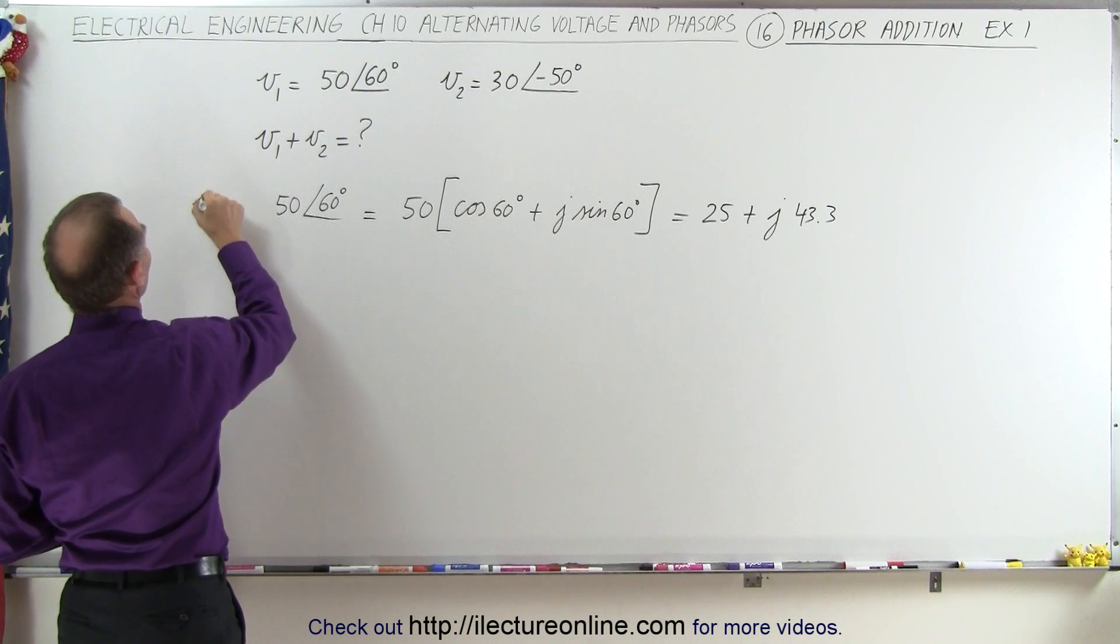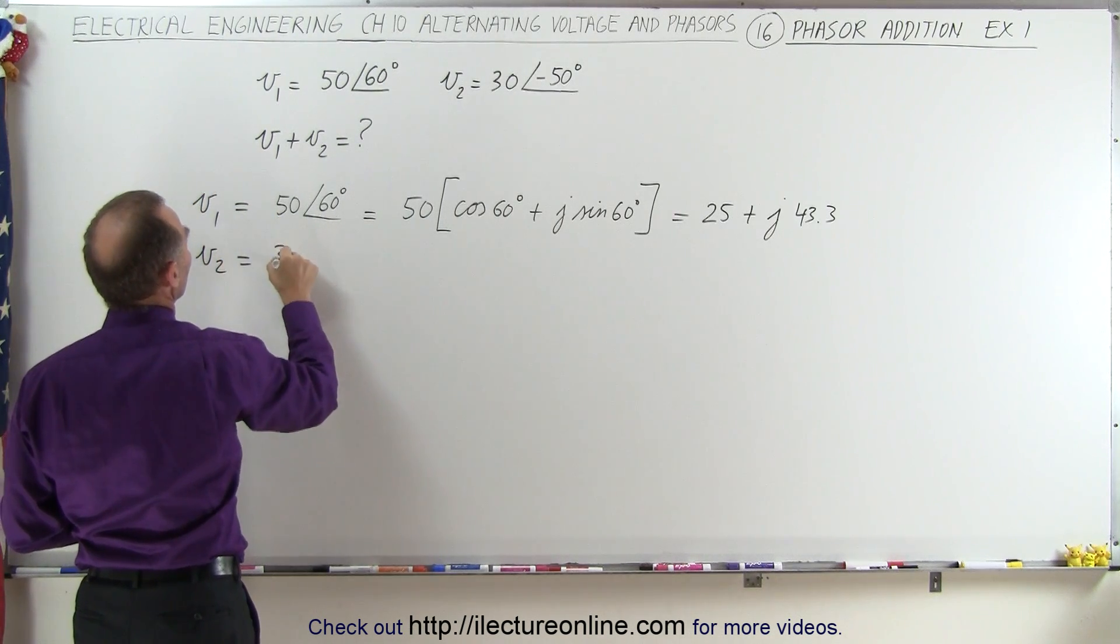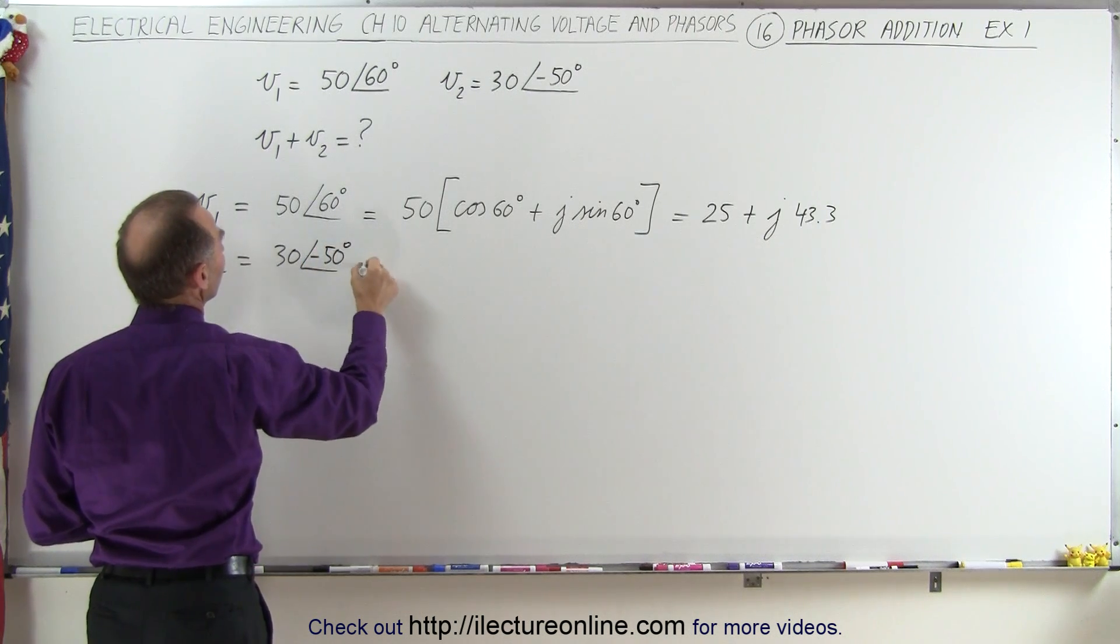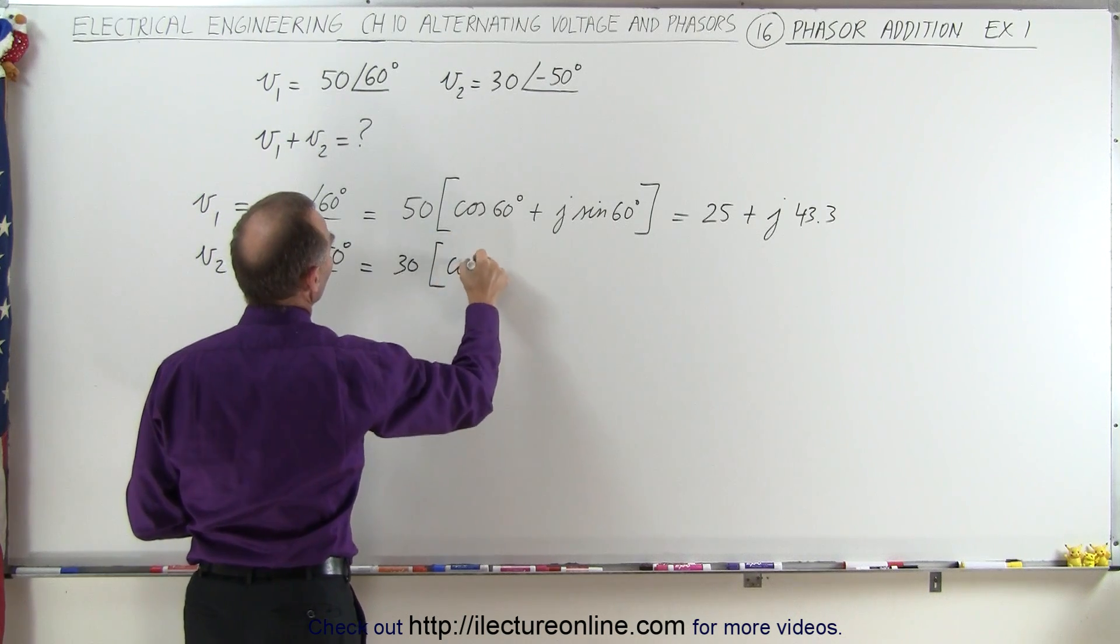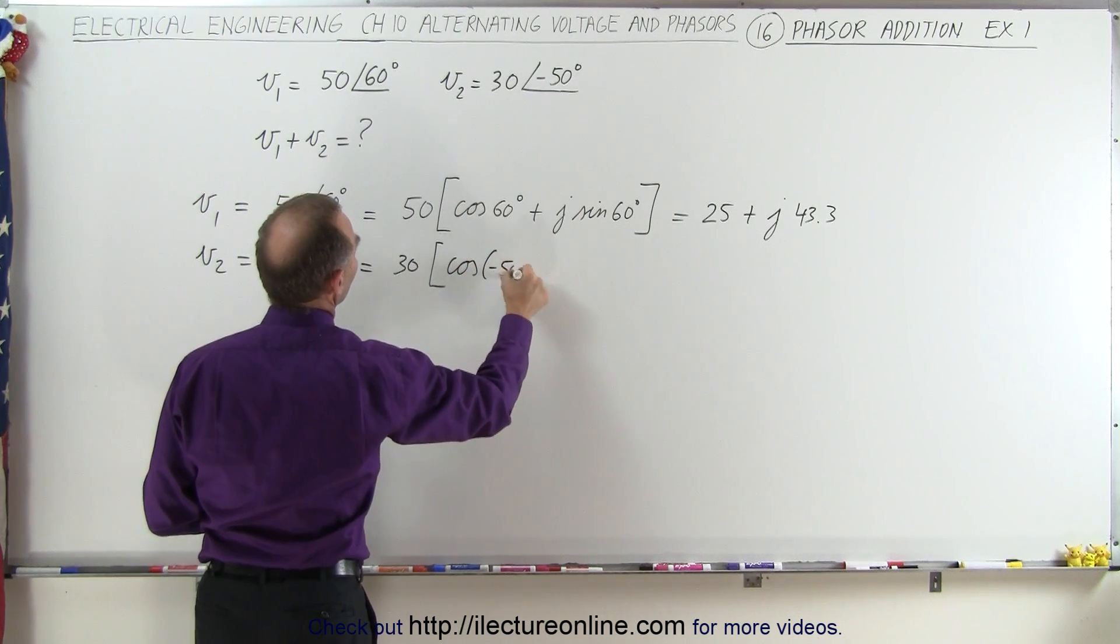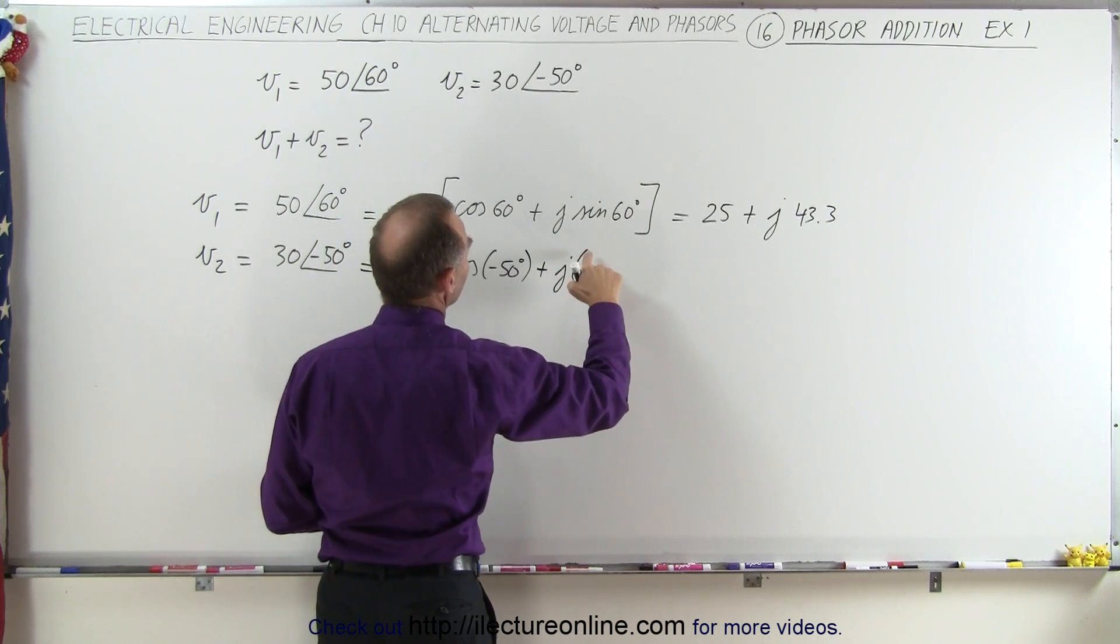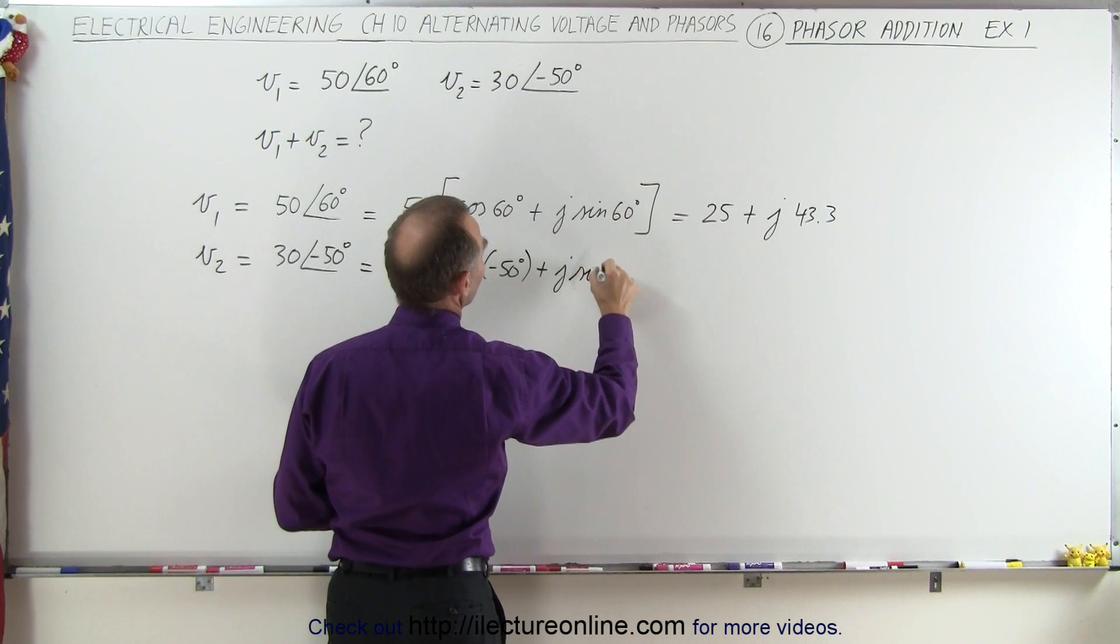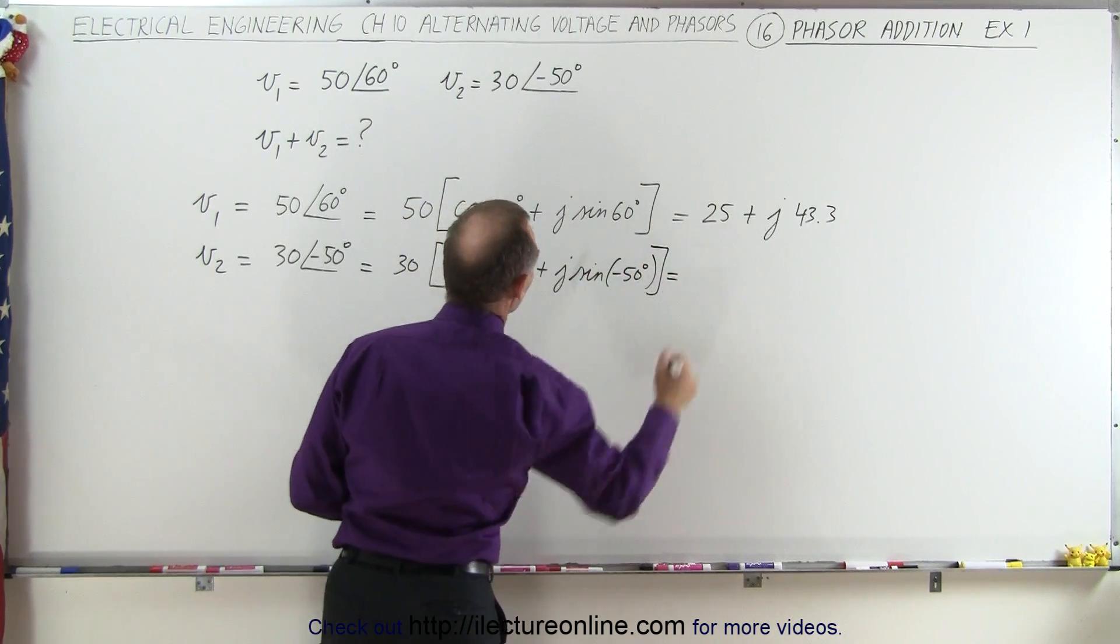So we have V1 is equal to this, V2 is equal to 30, and we have a negative angle of 50 degrees, so that would be equal to 30 times the cosine of minus 50 degrees plus j times the sine of minus 50 degrees.